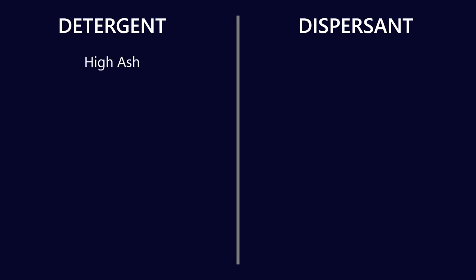What do the chemistries look like? Well detergents tend to be high in ash because they contain metals, so often they'll contain barium or aluminum or calcium or magnesium whereas dispersants don't. They tend to be low or no ash products.